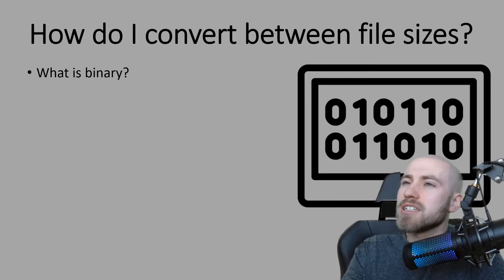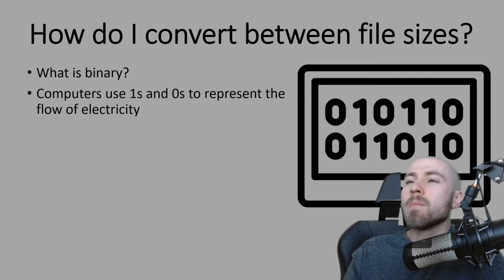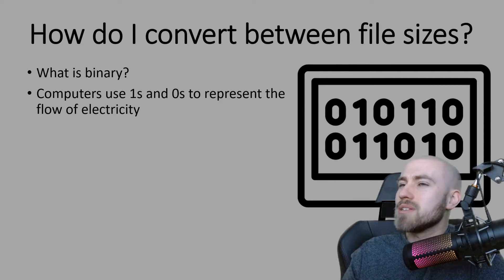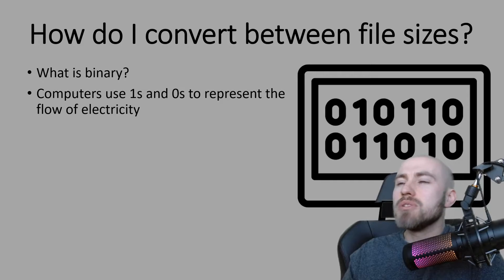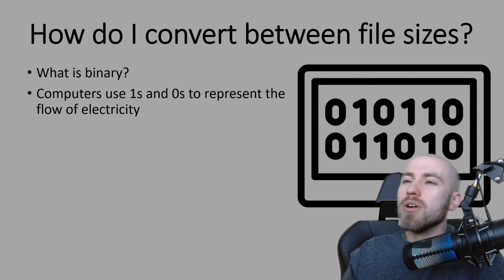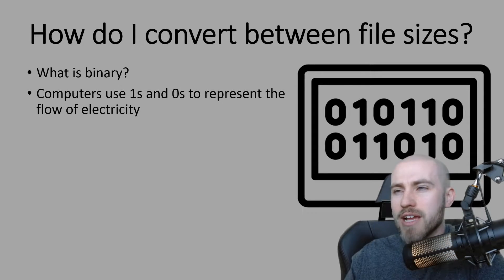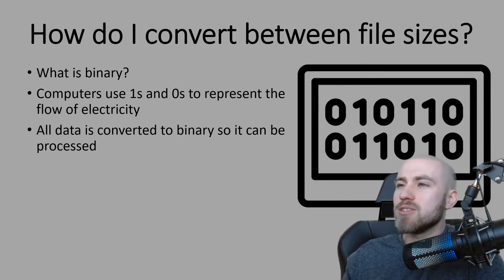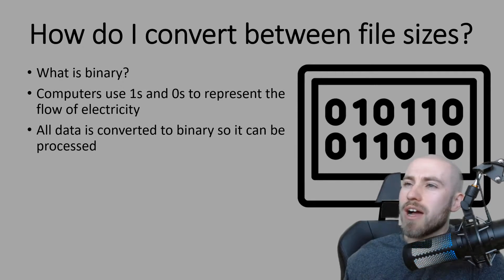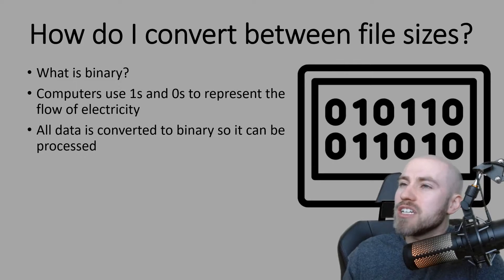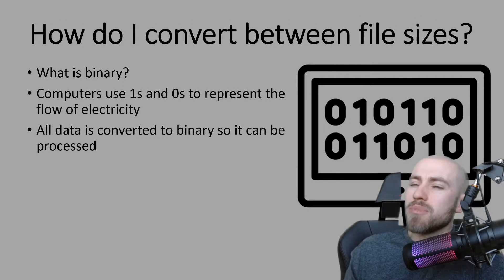In terms of a definition about what binary actually is — which has been a question on previous papers — computers use ones and zeros to represent the flow of electricity. That's probably not the definition you're expecting. A lot of people put something like 'the language the computer understands,' which isn't necessarily wrong, but in terms of an accurate definition this is what binary actually is. All data is converted to binary so that it can be processed, because the computer only understands binary — also referred to as machine code — so that it can process information and figure out what the instructions actually are.